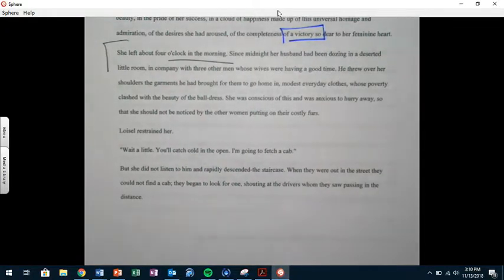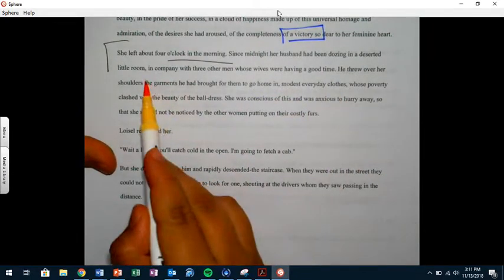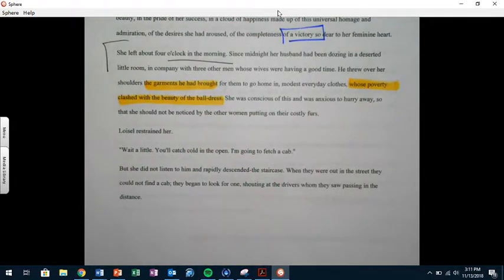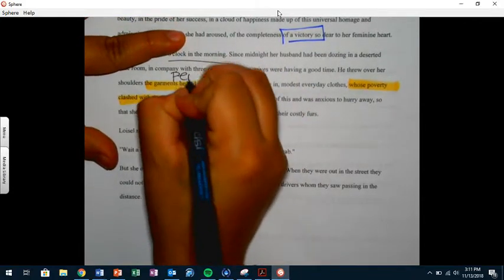The way I envision this is that the party's over and she's leaving. He comes behind her and puts over her a coat because it's cold. But it's not a fur coat, it's a modest coat. What do you think her reaction is? Oh my god, I don't want anybody to see me wearing this. I love the way that it says here that the garment was modest and the poverty of the garment clashed with the ball dress. What device do we have there? Personification.